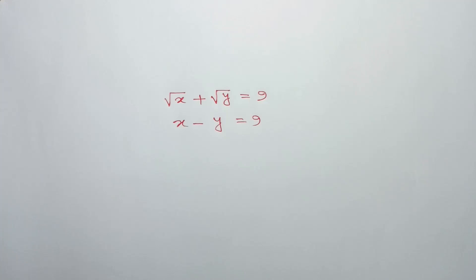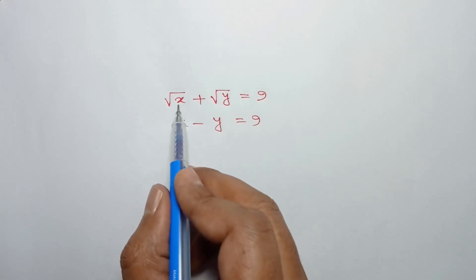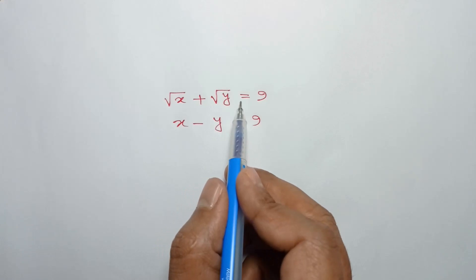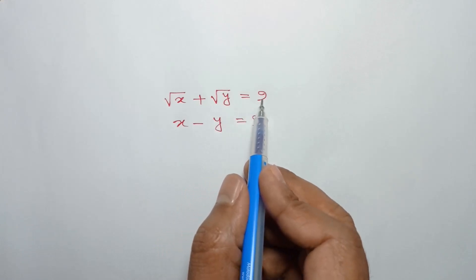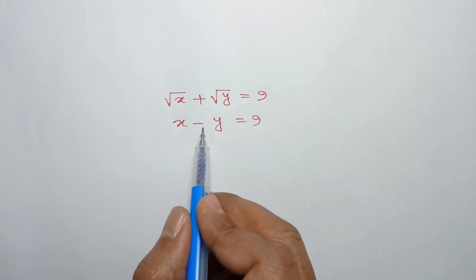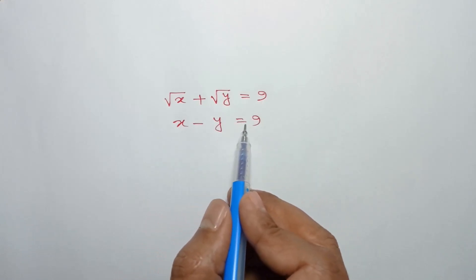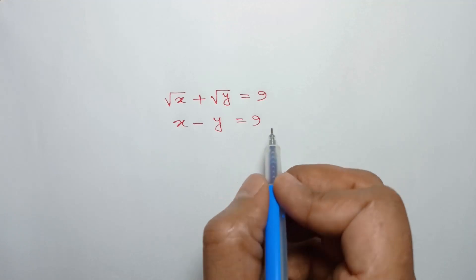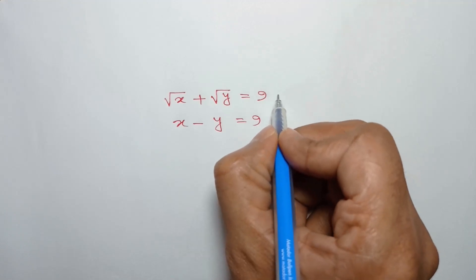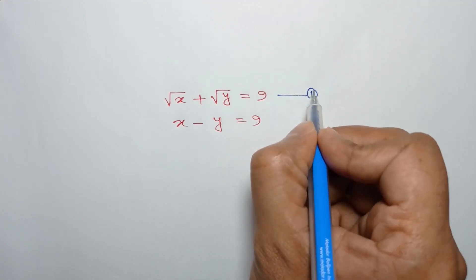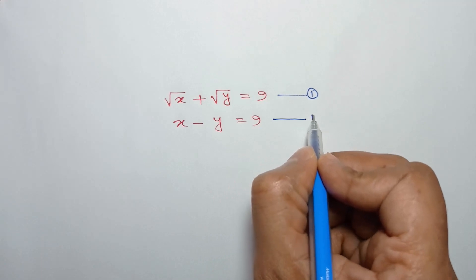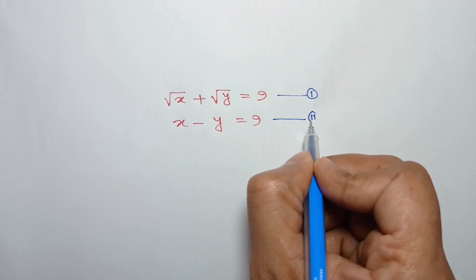Hi everyone. In this video I am going to show how to solve this system of equations: square root of x plus square root of y is equal to 9, and x minus y is equal to 9. Let's call them equation number 1 and equation number 2.